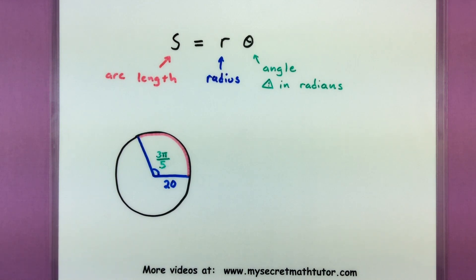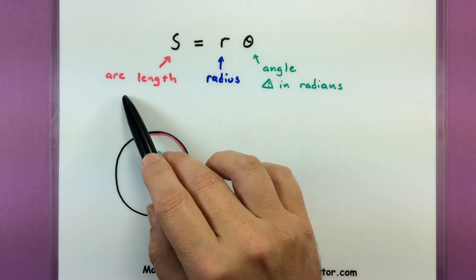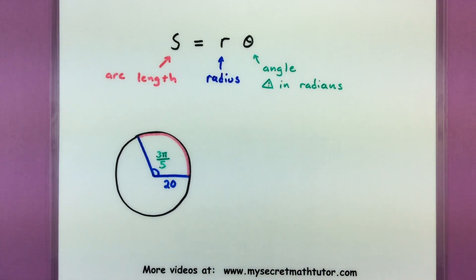You use this formula right here. This formula gives a connection between the arc length, the radius, and the angle of the circle as long as that angle is written in radians.